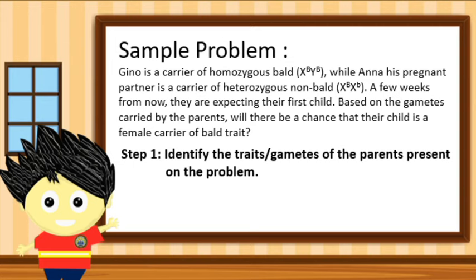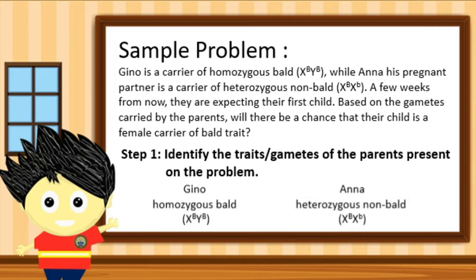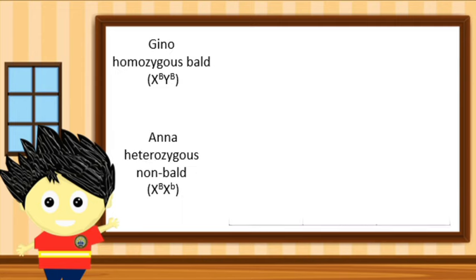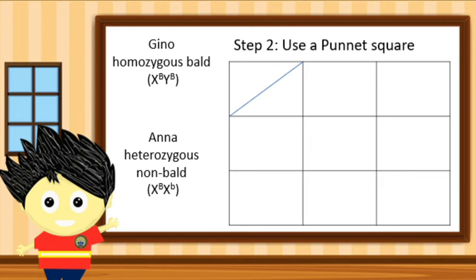Looking at the gametes of the parents in the problem: Gino is a carrier of homozygous bald trait, with gametes X and Y chromosomes with a superscript of identical capital letter B. Meanwhile, Anna is a carrier of heterozygous non-bald trait, with gametes of identical X chromosomes with a superscript of capital letter B and small letter b. Step 2: we need to use a Punnett Square. We will place the gametes of the parents on the vertical and horizontal sides of the Punnett Square.